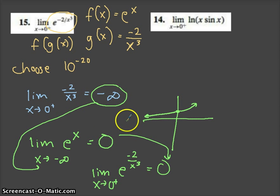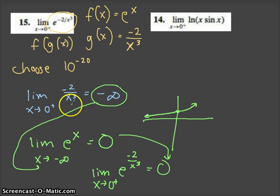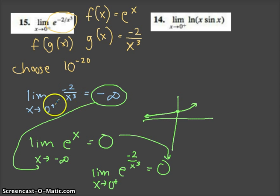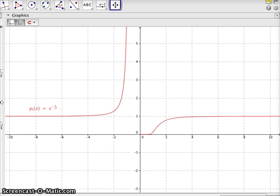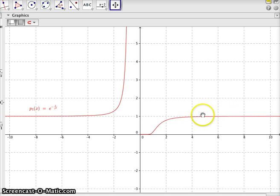There are a lot of key ideas here. You've got to know your graphs. Dividing by a very large number gives you 0. Dividing by a very small number gives you a huge number. In this case we're dividing by a really small number because we're approaching 0. And if we look at the graph, as we come from the right toward 0, the function approaches 0.